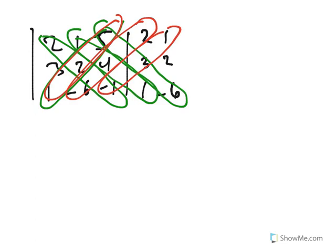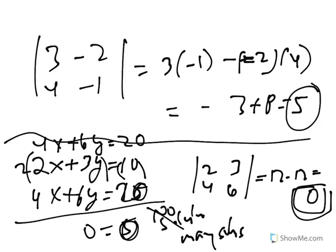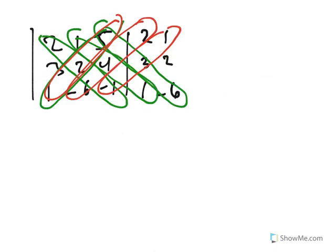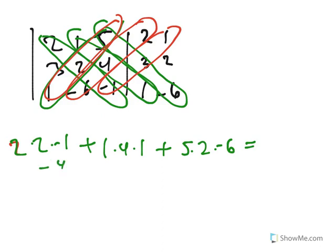And what we do, it is kind of similar to the crisscross—this is like the green diagonal, and this is the red diagonal. So the way this works is, for the green diagonals, we multiply the numbers together in the green diagonal. So 2 times 2 times negative 1, plus the numbers in the second green diagonal, 1 times 4 times 1, plus the numbers in the third diagonal, 5 times 3 times negative 6. And if we do that, we get negative 4.